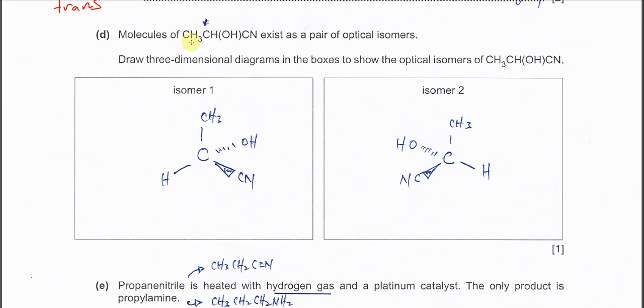Part (d): Molecules of CH3CH(OH)CN exist as a pair of optical isomers. When dealing with optical isomers, you must draw the mirror images. Put the carbon at the center and put the four groups at four different positions. Draw the 3D structure with wedge and dotted lines. When you draw isomer 1 with all groups in certain positions, isomer 2, the mirror image, must follow the sequence. The methyl group must be on this position, OH at the back, CN in front, and H in the same plane with the carbon.